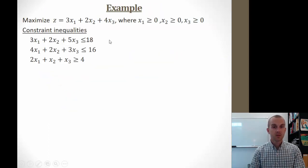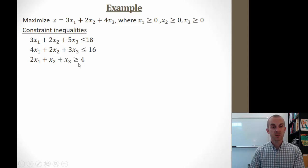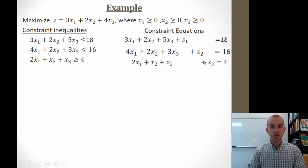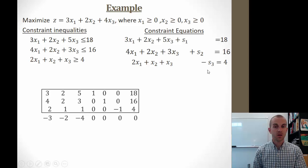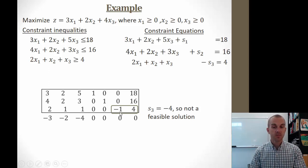Let's look at an example. We want to maximize z = 3x₁ + 2x₂ + 4x₃, with all variables greater than or equal to zero. One of the constraints is a greater than or equal to inequality. We turn all inequalities into equations, but that constraint becomes minus s₃ instead of plus — a surplus variable. In the simplex tableau this appears as negative 1, which means s₃ equals negative 4 — not a feasible solution since all variables must be greater than or equal to zero. We have to fix this.